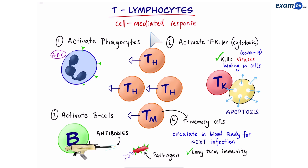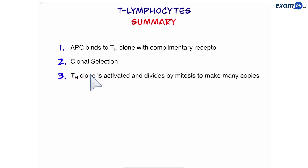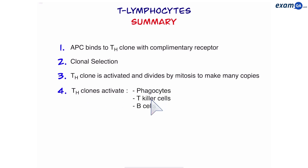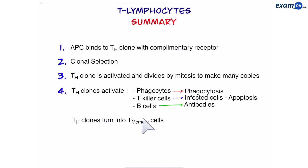We can see that all the T helper cells work by interacting with other cells, which is why it's called a cell-mediated or cellular response. To summarize: step 1, the APC binds to the T helper clone with a complementary receptor; step 2, clonal selection — the clone is activated and divides by mitosis to make many copies of T helper cells. The T helper copies activate phagocytes, T killer cells, and B cells. Phagocytes do phagocytosis, T killer cells kill infected cells by making them undergo apoptosis, and B cells produce antibodies. Finally, some T clones turn into memory cells, providing long-term immunity.